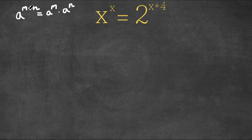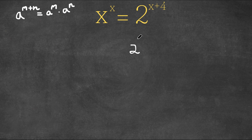So what I'm going to do is I'm going to use this property for 2 to the power of x plus 4. Think of 2 as a, x as m, and 4 as n. So this could be written as 2 to the power of x times 2 to the power of 4.